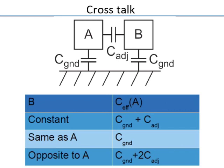Besides delay, another important aspect is crosstalk, which falls under the topic of signal integrity — how good is the signal at the receiving end. Taking a cross-section of two wires A and B going into the slide: each has a capacitance to ground, and there is a coupling capacitance between adjacent wires. This adjacent capacitance induces coupling from one wire to the other when a transition occurs.